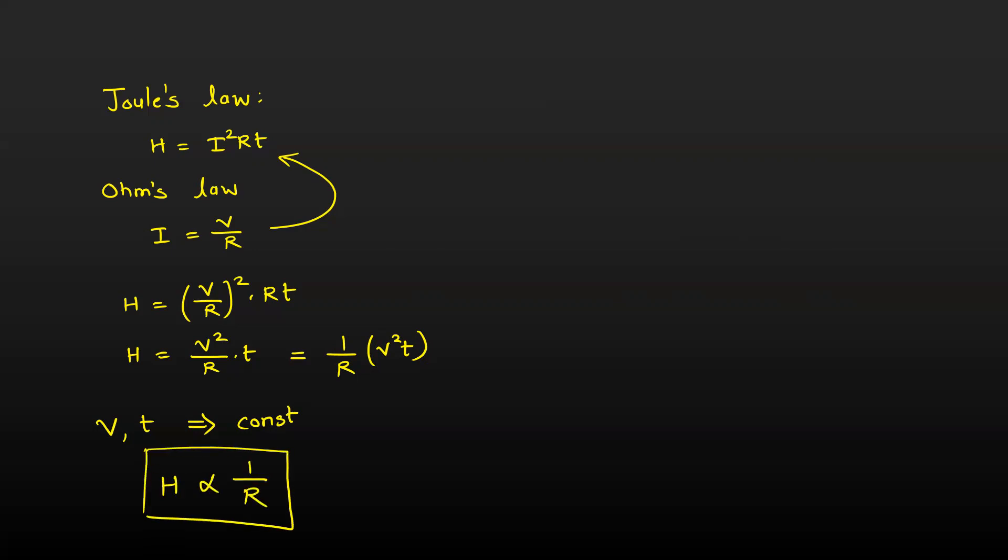And do you remember what was the effective resistance or the equivalent resistance for the series and parallel combination? For series, equivalent resistance was 2R. For the parallel, equivalent resistance was given as R by 2.